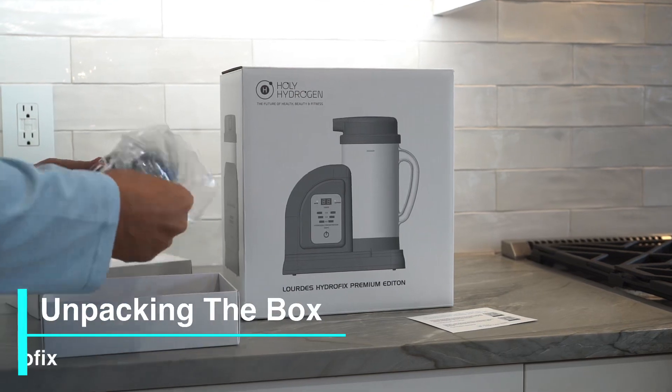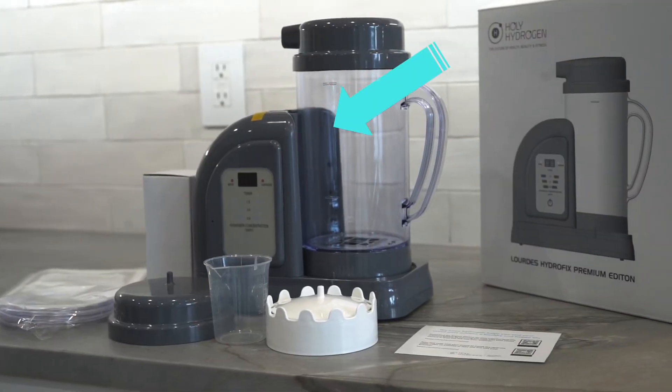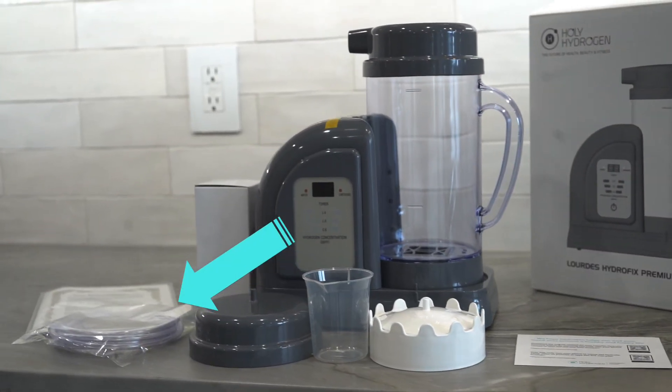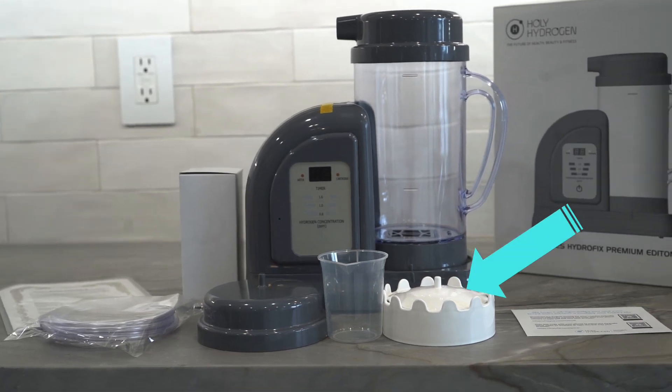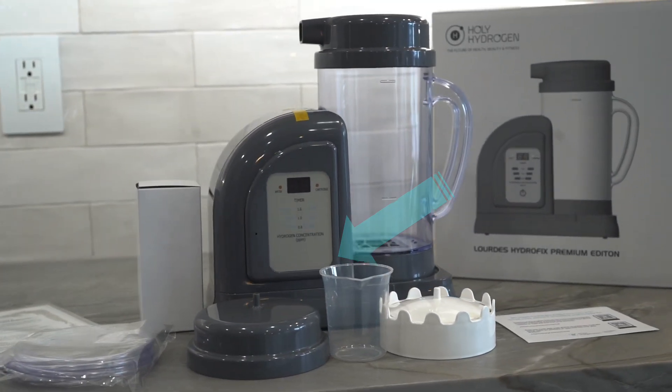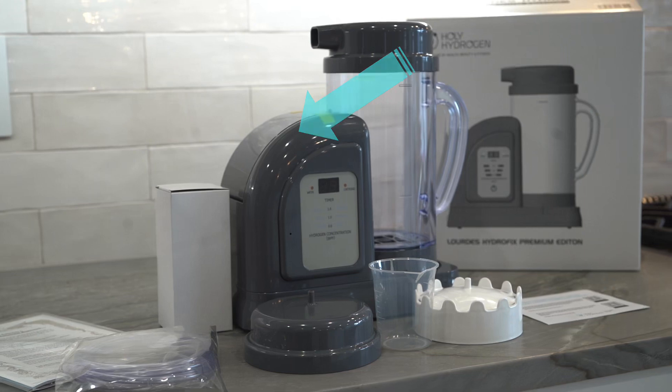To get started, let's take everything out of the box. Included in the box is the main unit, your inhalation kit's lid and cannula, the white hydrogen keeper, measuring cup, cartridge, and your power cord.